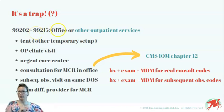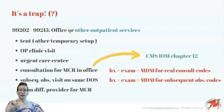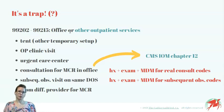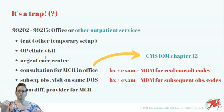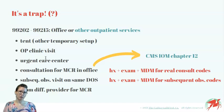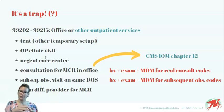Notice the full descriptor of these codes: office or other outpatient services. Now these other outpatient services can be something simple, like a tent or other temporary setup, an outpatient clinic visit, an urgent care center visit. But they can also be something trickier, like a consult for a Medicare patient, or a subsequent visit in an observation unit on the same day of service, again for a Medicare patient.